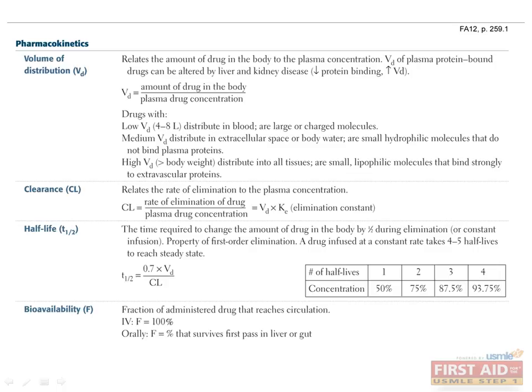Bioavailability, F, is the fraction of administered drug that reaches the circulation. For IV administration, F equals 1. For oral administration, F equals the fraction of drug that survives the first pass through the liver.